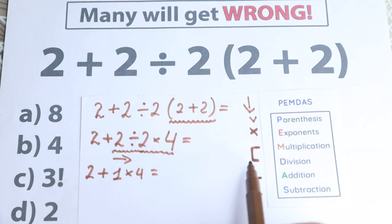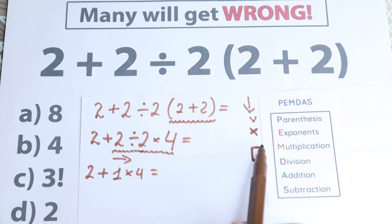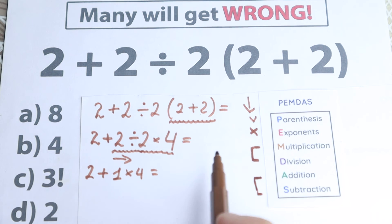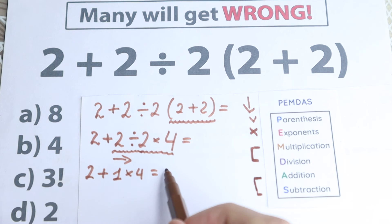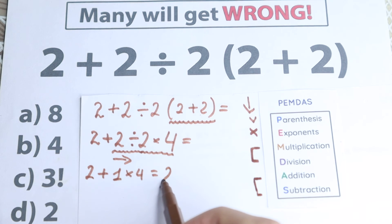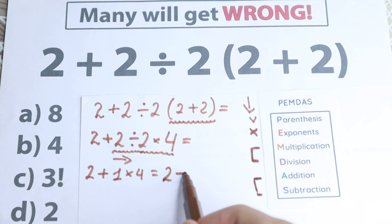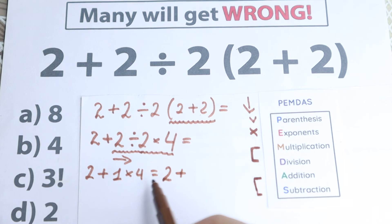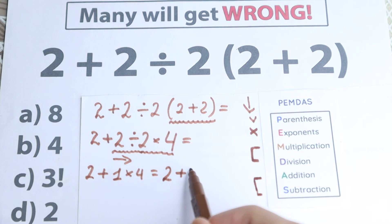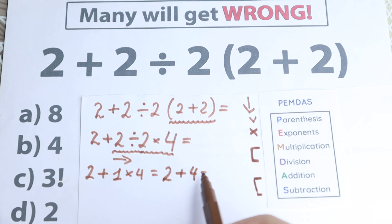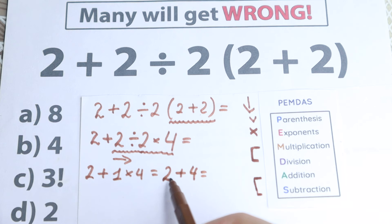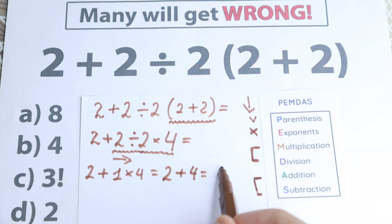So we need to multiply first and then add. We have 2 plus 1 times 4, which equals 2 plus 4, and as a result the simple addition gives us 2 plus 4 equals 6.